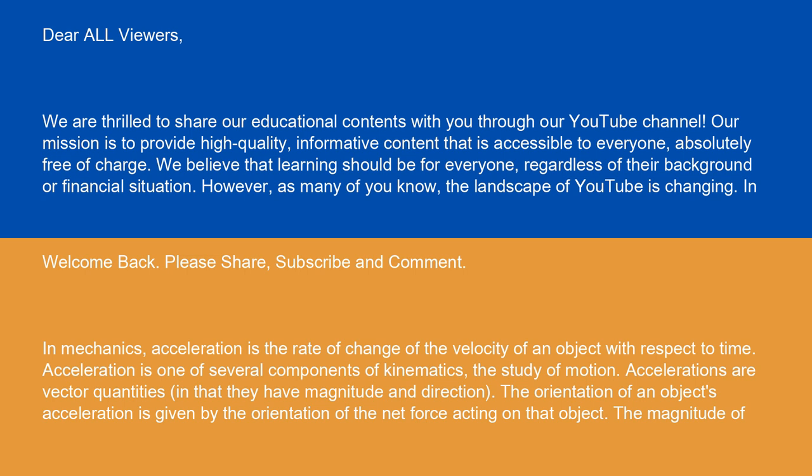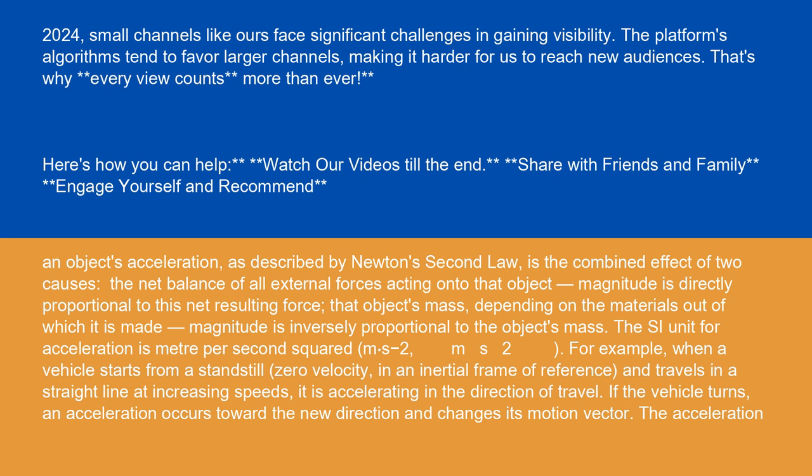In mechanics, acceleration is the rate of change of the velocity of an object with respect to time. Acceleration is one of several components of kinematics, the study of motion. Accelerations are vector quantities in that they have magnitude and direction. The orientation of an object's acceleration is given by the orientation of the net force acting on that object. The magnitude of an object's acceleration, as described by Newton's second law, is the combined effect of two causes: the net balance of all external forces acting onto that object, where magnitude is directly proportional to this net resulting force; and that object's mass, depending on the materials out of which it is made, where magnitude is inversely proportional to the object's mass.